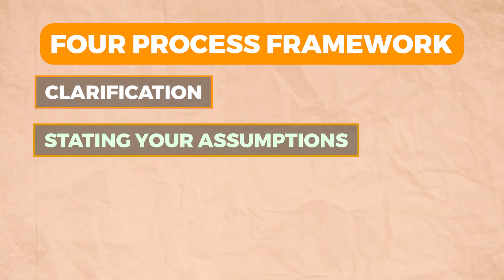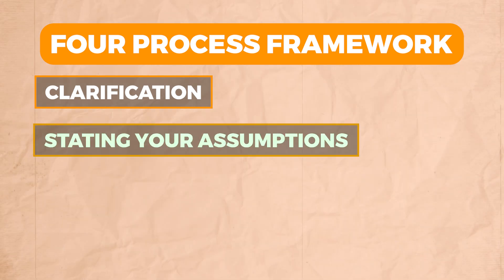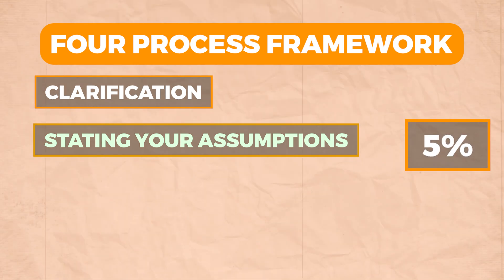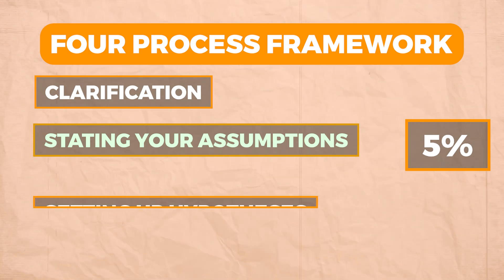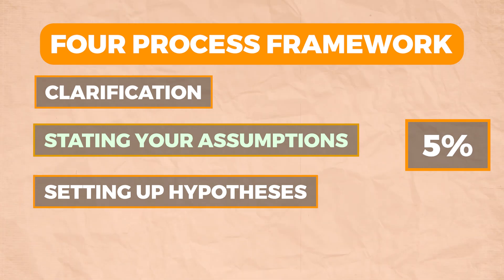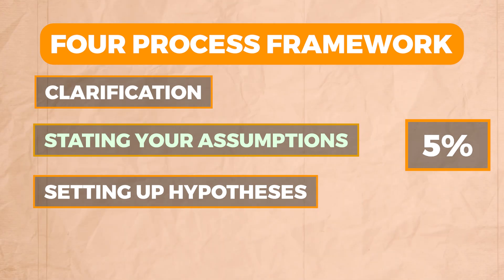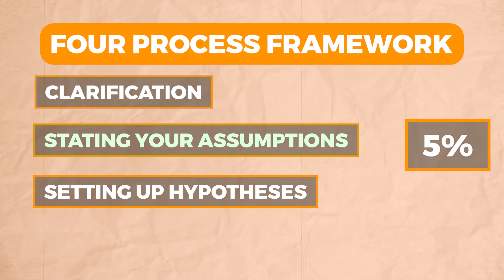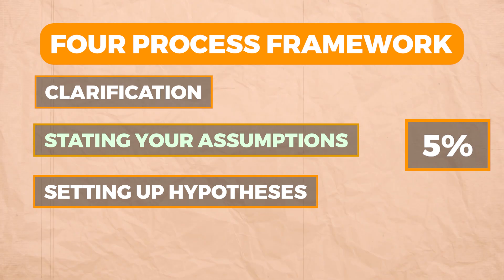Step two is stating your assumptions — for example, I'll assume the decline is 5% month-over-month and that no external events are causing it. Step three is setting up hypotheses — for instance, is the decline happening in one device type or all device types? Step four is defining metrics: once you have hypotheses, define metrics to prove them — such as cutting data by declining users by device type to see if there's a difference between segments.